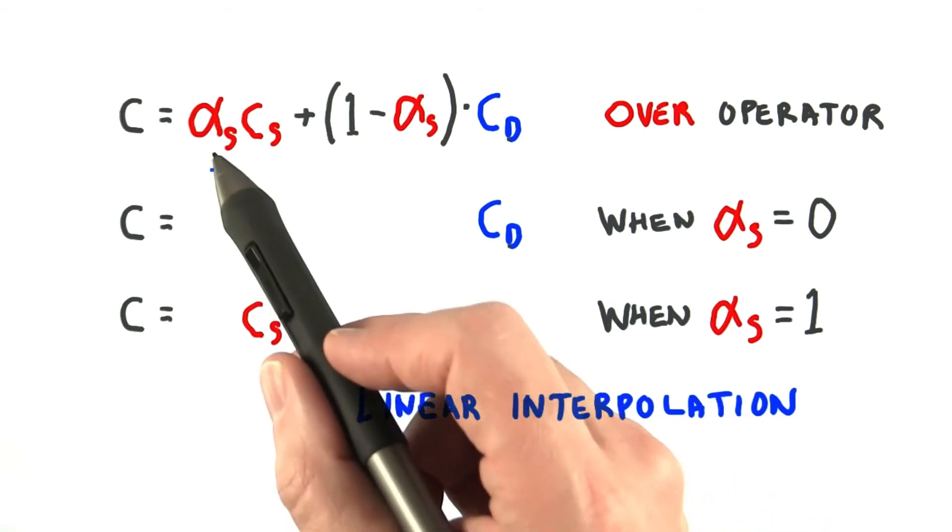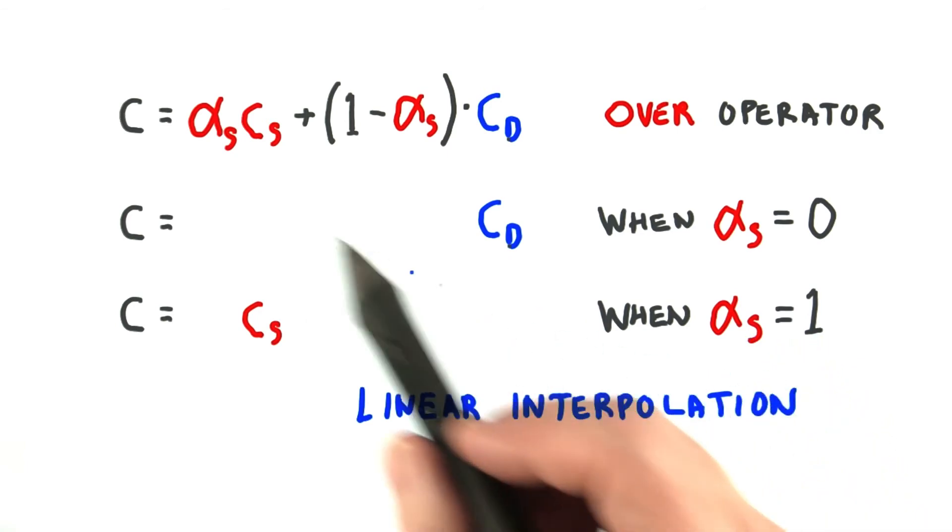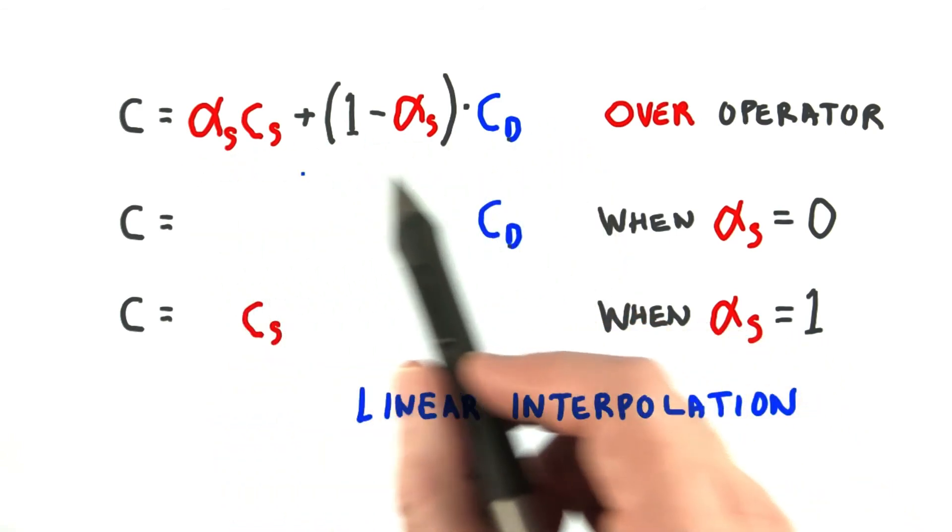This idea of having a control value, in this case alpha, that varies between 0 and 1, is commonly used in many areas of computer graphics. Expect to see this sort of equation elsewhere as you explore the field.